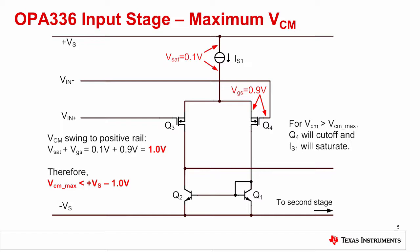Starting at VN minus and walking to plus VS, we see the gate to source voltage of Q4 plus the saturation voltage of the current source IS1. Typical numbers for these voltage drops are 0.9 volts for VGS and 0.1 volts for the current source VSAT for a total of 1 volt. Thus, the input common mode voltage can swing to within 1 volt of the positive supply. That is, VN must be less than plus VS minus 1 volt. Driving the input to a voltage greater than this will cause the transistor Q4 to cut off and the transistor in IS1 to saturate, giving a nonlinear response.